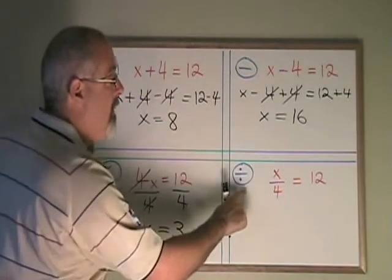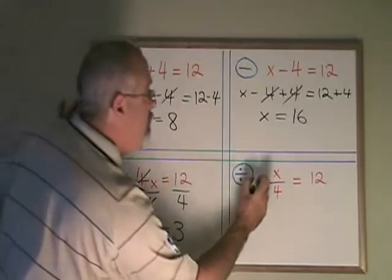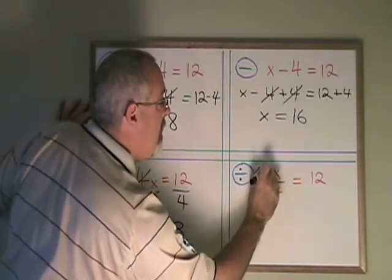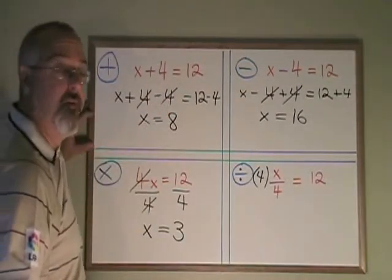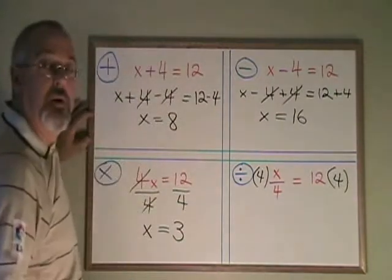Here I have division. My x is being divided by a 4, and the opposite of division is multiplication. So I'm going to multiply the left side of the equation by a 4, which means I have to multiply the right side of equation by a 4 as well.